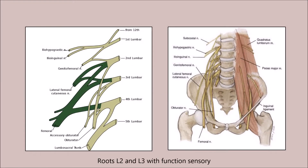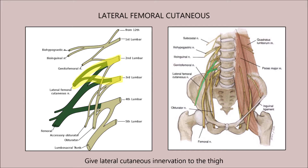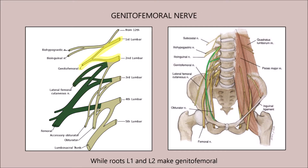Root cell 2 and 3, with functions as a nerve, lateral cutaneous innervation to the thigh. Root cell 1 and 2 make genitofemoral, which travels down the pelvis, psoas major right behind.